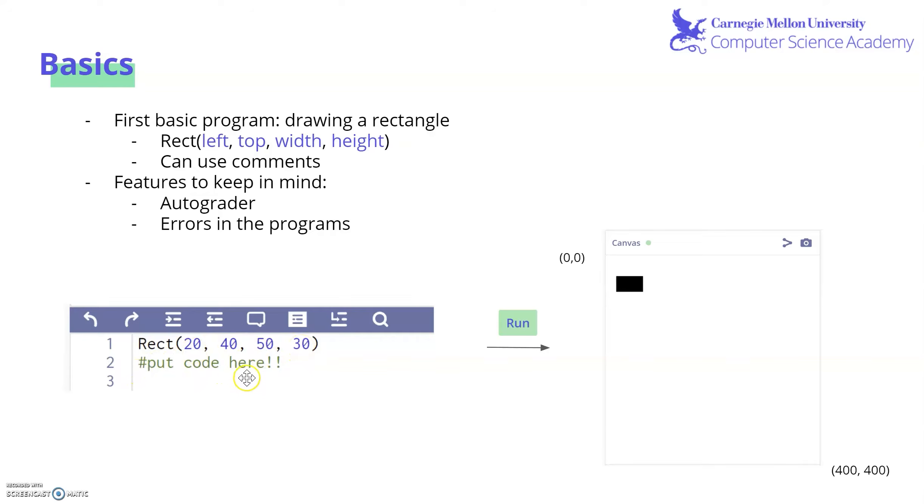You can also put comments in your code, but this will never be read by Python. Instead, this is just to help you code and clear up any confusion. It's important to keep in mind some features we discussed, such as the autograder, which allows for grading of all your exercises, and the errors in the program, such as errors where Python isn't properly being run, or if the autograder does not think your code is correct.